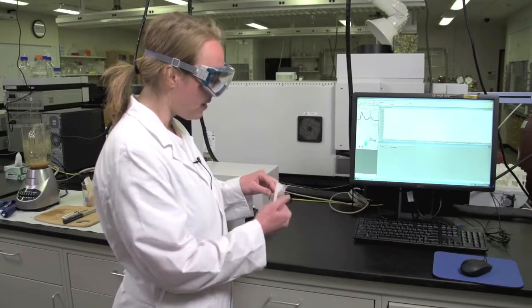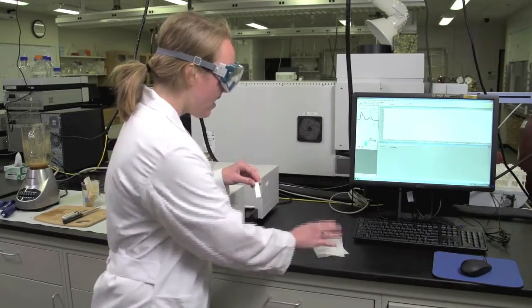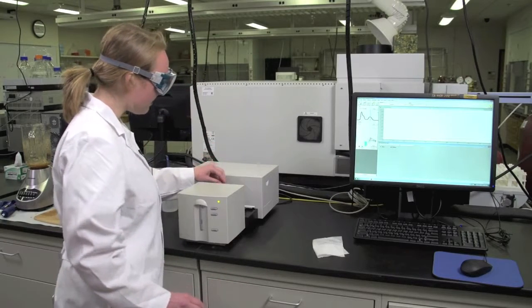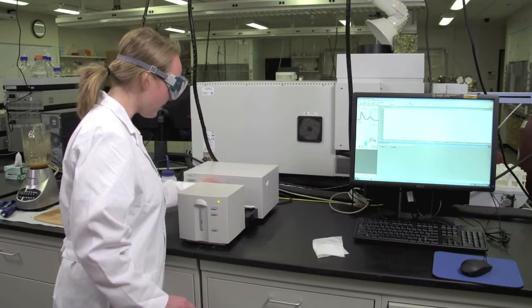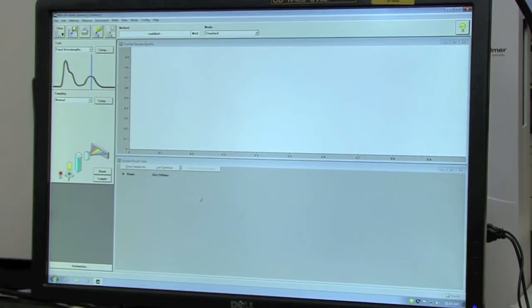Fill the cuvette with DI water and wipe the outsides with a Kimwipe to remove all fingerprints and oils. Place it inside the sample compartment chamber and press the arm down to lock it into place. To collect the blank spectrum, click on the Blank button.